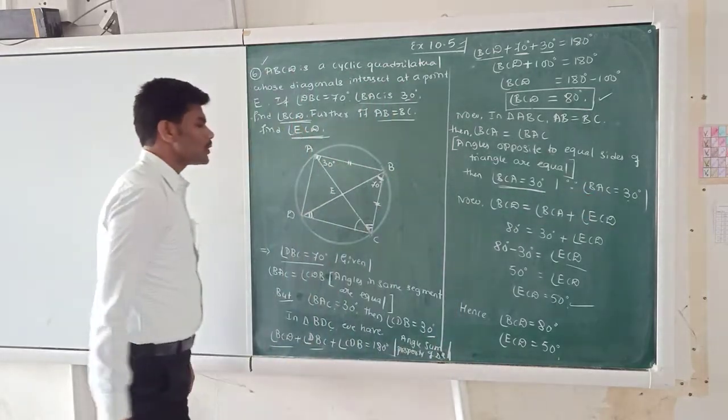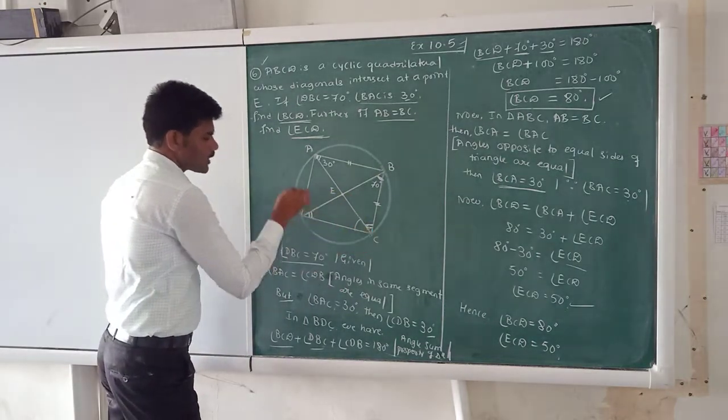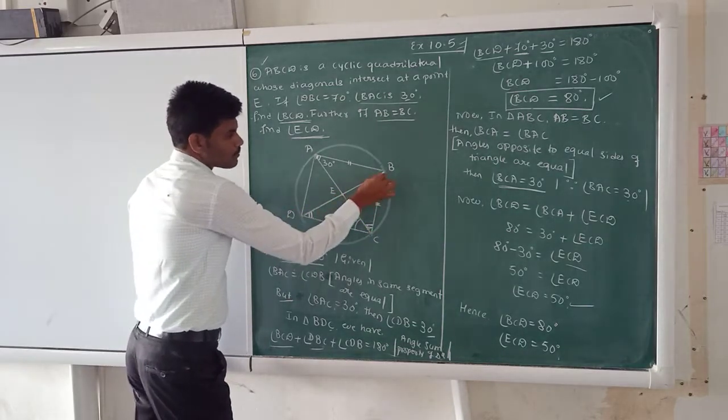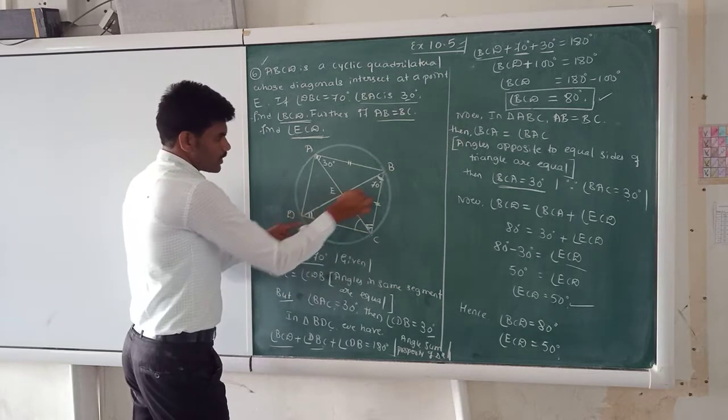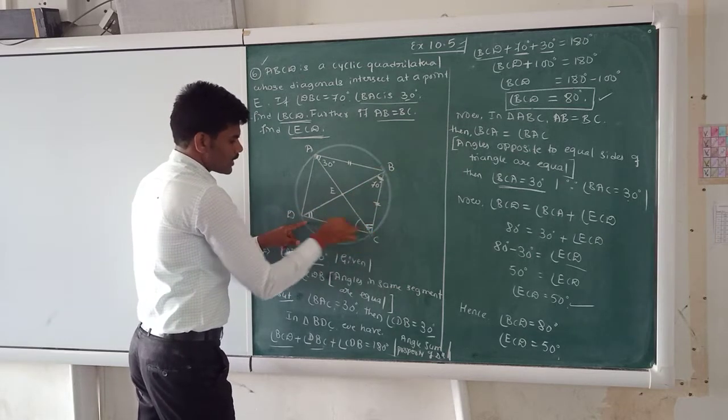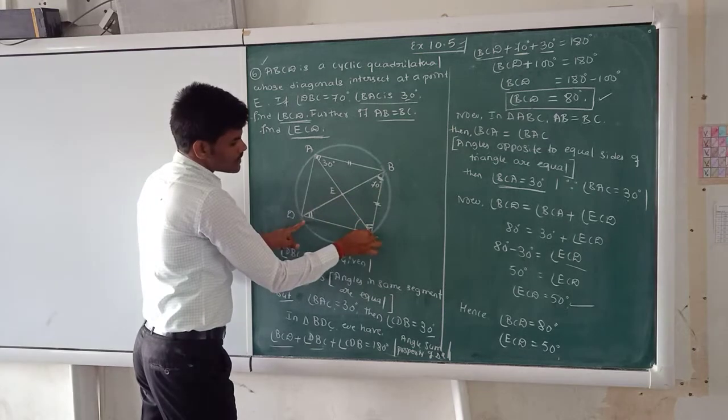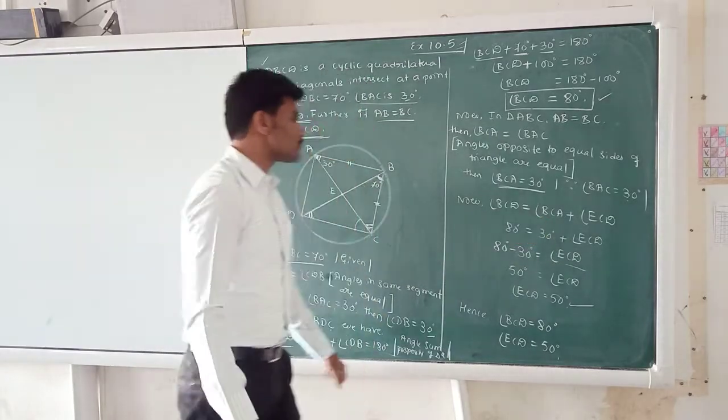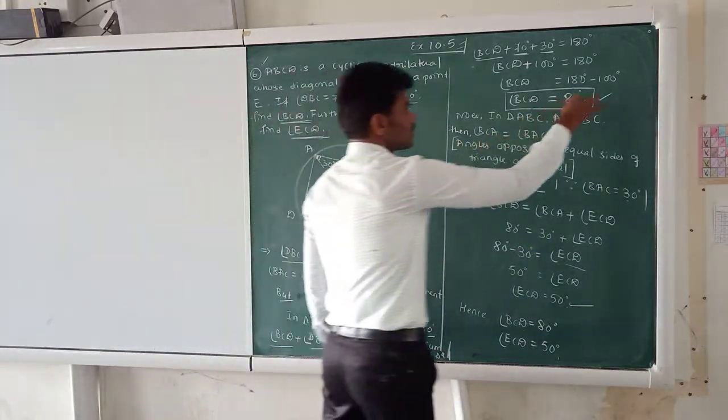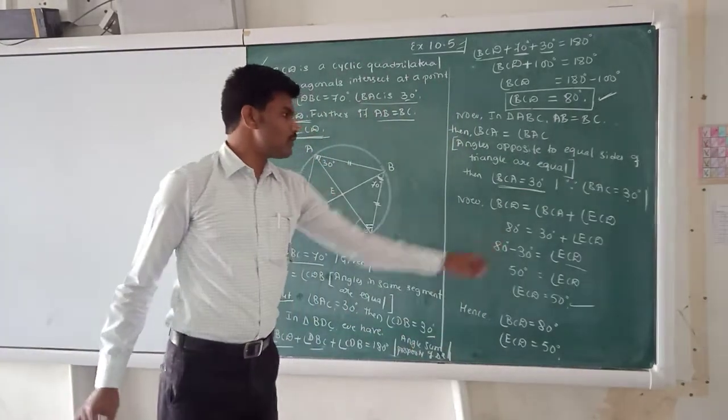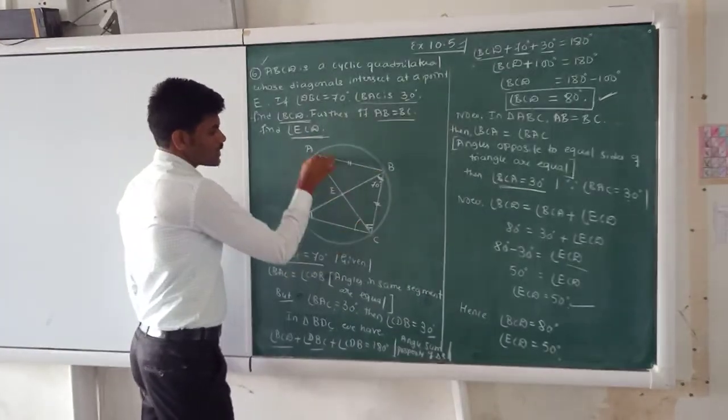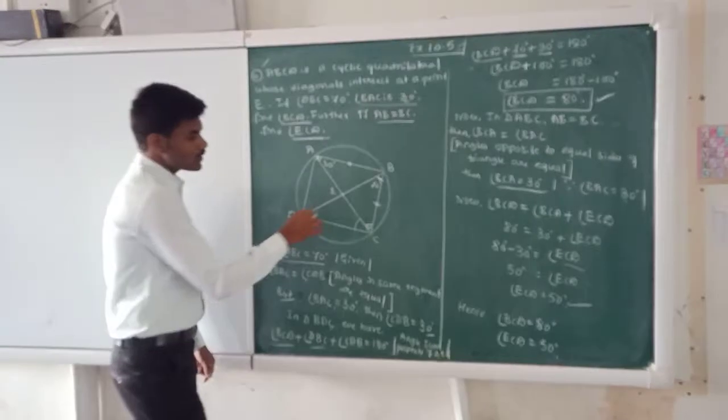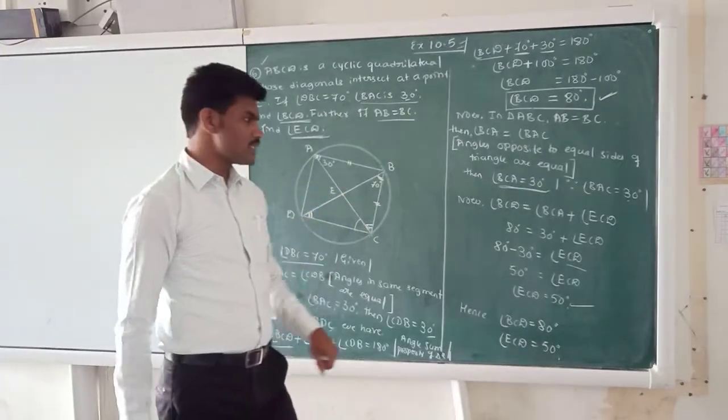But, the question arises. We want this angle ECD. Okay? Observe, angle ECD. So, what happens? You take this angle BCD. This full angle BCD is equal to angle BCA plus angle ECD. I have to get here. Okay? So, angle BCD, how much did we get here? Angle BCD we got 80 degrees. So, substitute the value. And, angle BCA, angle BCA is 30 degrees. We got here, substitute the value. Then, what happens here? We want angle ECD. You should write as angle ECD. Okay?